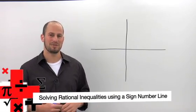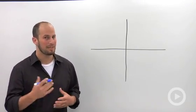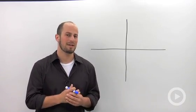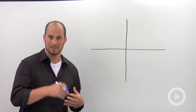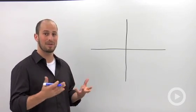Using a signed number line to solve a rational expression inequality. For this particular example, what we're really concerned with is finding out when a rational expression, a fraction of polynomials, is going to be greater than or equal to zero.